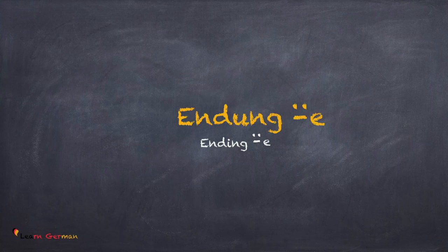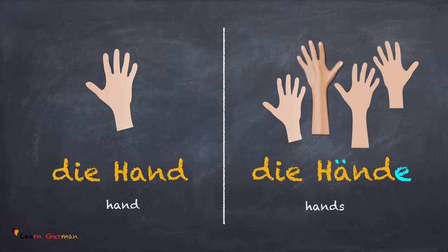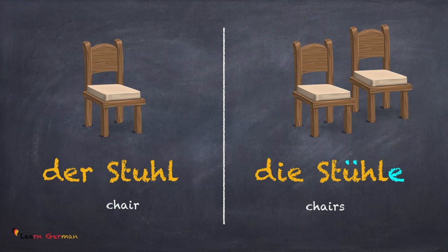Endung Umlaut und E. Let's take two examples. The first one is Die Hand — Die Hände. The next one is Der Stuhl — Die Stühle. In some cases the plural is made by adding an Umlaut to either A, U, or O and adding an E at the end.